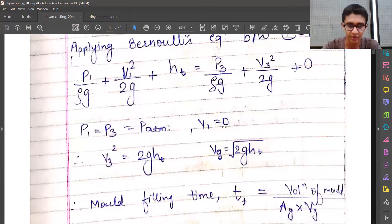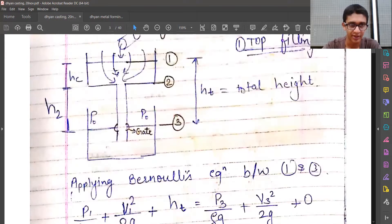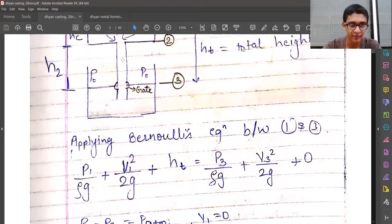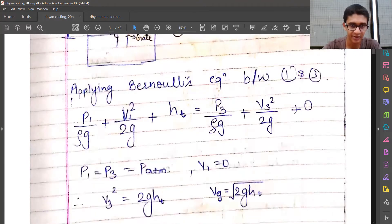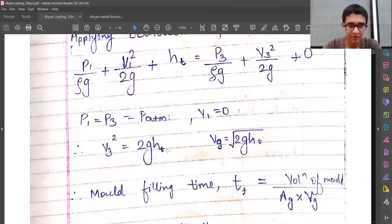The v3 velocity will be equal to the square root of 2gh3, that is ht. This is because of gravity-driven flow. The velocity will increase as the metal reaches location 3. This comes directly from v² - u² = 2as. In this case, vg, the velocity at the gate, will be √(2ght).